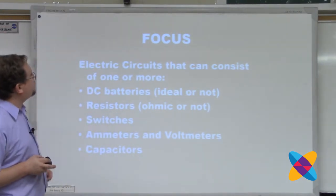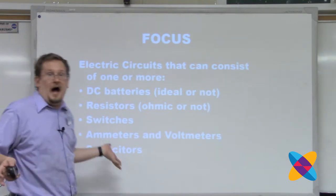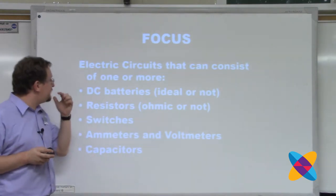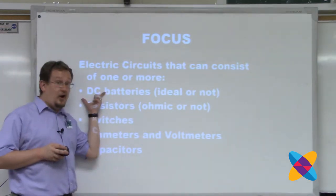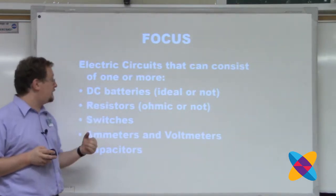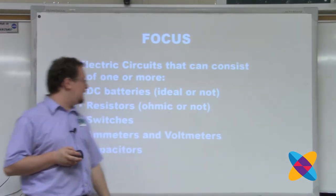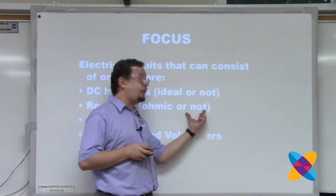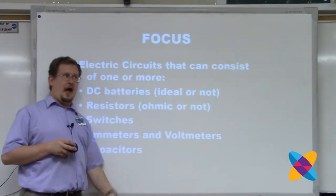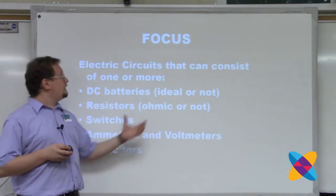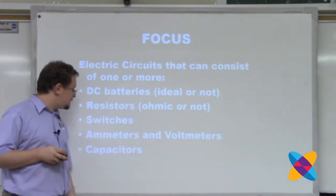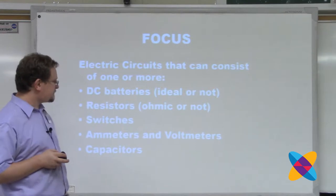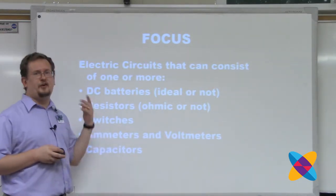The focus of this unit is electric circuits. In AP Physics II, these circuits can consist of one or more batteries — no alternating current, only DC direct current. Batteries may or may not be ideal. Resistors are assumed to be ohmic unless otherwise stated, or students may be asked to design an experiment to determine whether a resistor is ohmic. Also covered: switches, ammeters and voltmeters assumed to be ideal, and capacitors. No transistors, inductors, or other circuit elements.